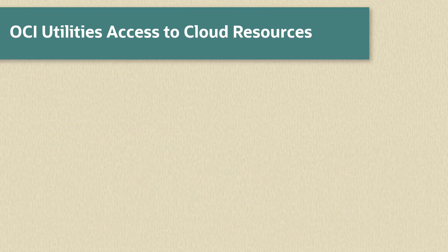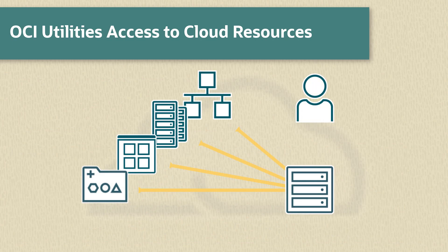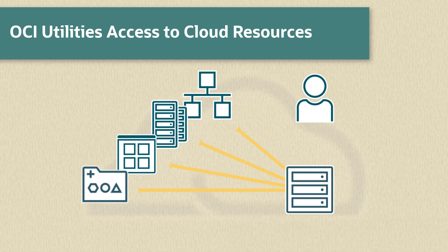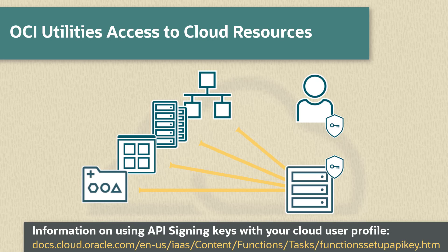To be able to create block volumes and automatically attach them to an instance, you need to provide permissions for your instance to administer storage resources in your Oracle Cloud Infrastructure. Creating, attaching and detaching volumes through the web console is discovered on the instance by the oci-utils, which uses the oci.service daemon to discover changes. To use resources in the cloud from the command line, permissions must be in place. One way is to set up an API private and public key pair between the instance and the cloud web console user.